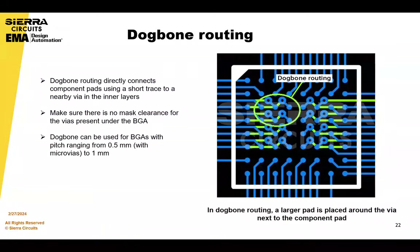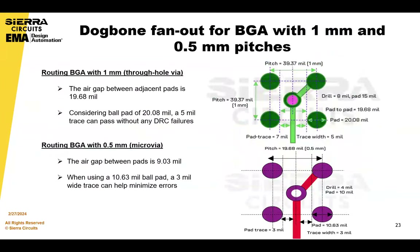There shouldn't be any mask clearances for the vias under the BGA. You want to cover those vias and you could possibly plug those vias with solder mask. Ask your fabricator what their design rule is. But you want those vias to be small enough that when you cover them with mask, the mask doesn't fall into the via.